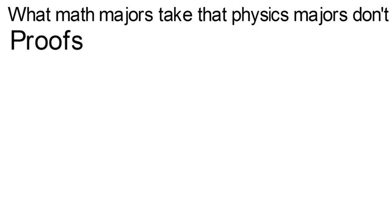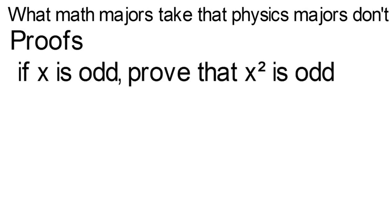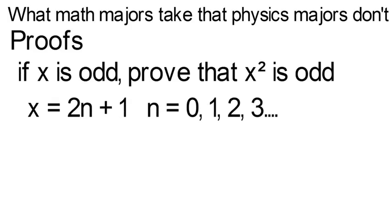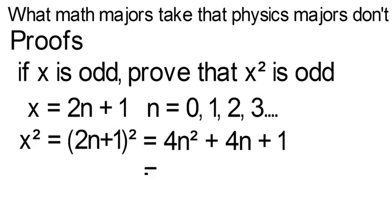So the first one is a proofs class, which I actually have heard some physics students take at some schools, but this isn't always true. So in my math video, I gave an example of if x is odd, prove that x squared is also odd. Where you had to define an odd number as 2n plus 1, where n can be any integer, then you just plug in 2n plus 1 for x, square it, then move that equation around, where you see that the last part must definitely be odd. So that's one simple example, and you'd see more methods of proving things.